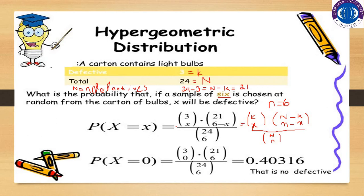If we want to find the probability that there are no defectives, since X represents the number of defectives, we substitute X equal to 0: 3C0 times 21C6, divided by 24C6, which is equal to 0.40316. That is the probability of zero defective bulbs in the sample.